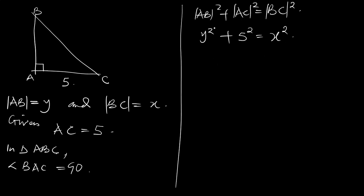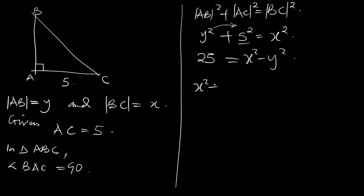Applying the Pythagorean theorem, we have AB² + AC² = BC², so Y² + 5² = X². That gives us Y² + 25 = X². Moving Y² to the other side, we now have X² minus Y² equals 25.